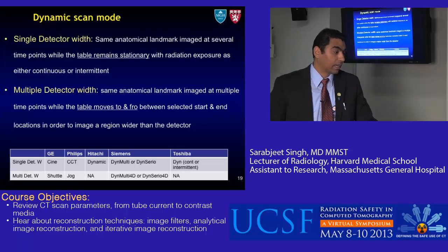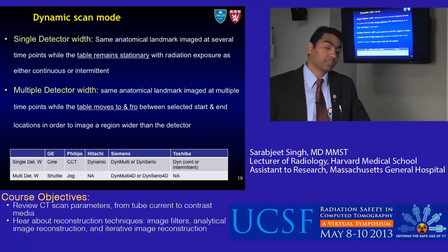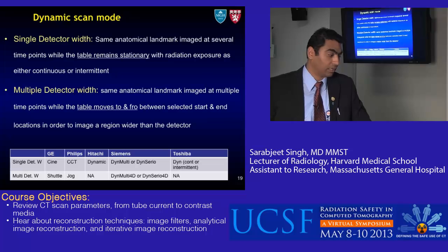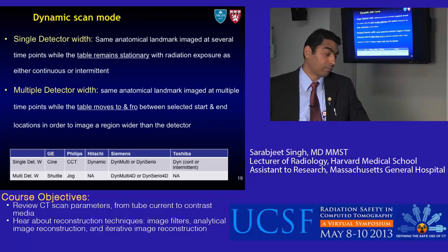Now let's look at dynamic scan mode. In single detector width mode, the same anatomical landmark is imaged at several time points while the table remains stationary, with radiation exposure either continuous or intermittent. In multiple detector width mode, the same anatomical landmark is imaged at multiple time points while the table moves back and forth between selected start and end locations to image a region wider than the detector. Different vendors use different names: GE calls it Cine mode or Shuttle mode; Philips calls it CCT or JOG; Hitachi calls it dynamic; Siemens calls it Dyne Multi or Dyne Serial.